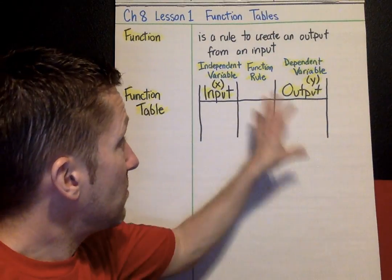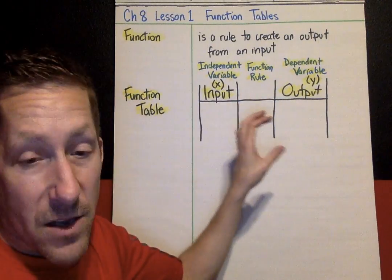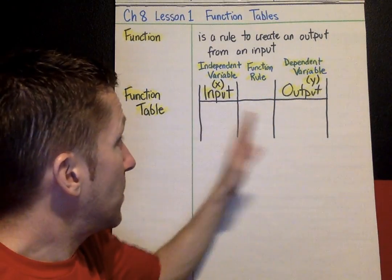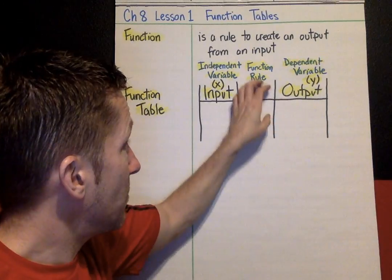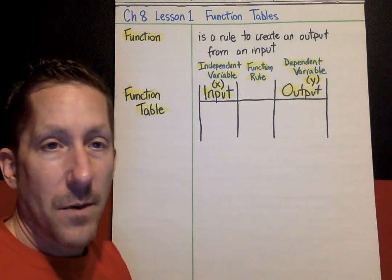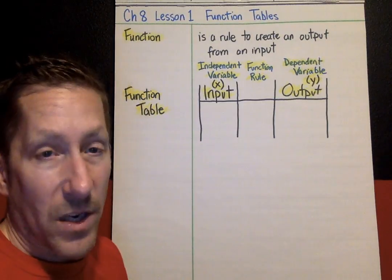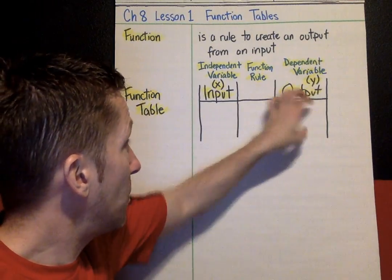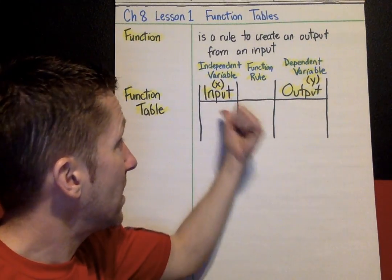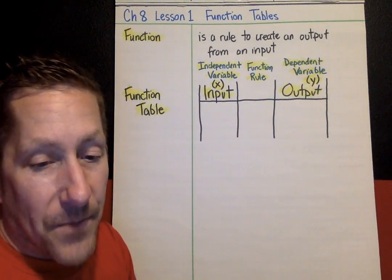Also, you may have a function table where you know the output but you don't know the input. So you might have the output, you might know the rule, and you will be trying to find the input. We'll look at that in just a little bit. That's called working backwards. If you know the output, not the input, you're going to try and figure out, okay, this is my output. What did I start with?